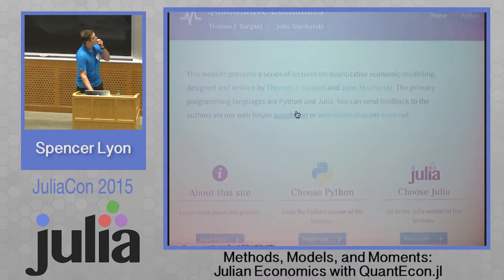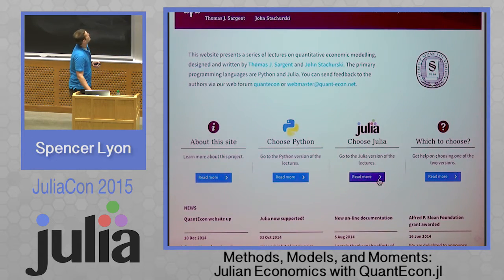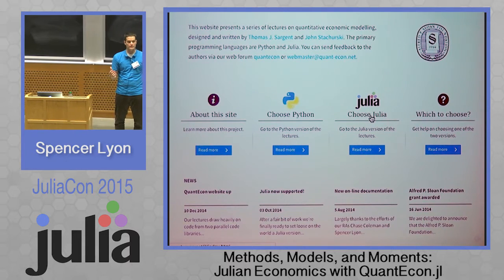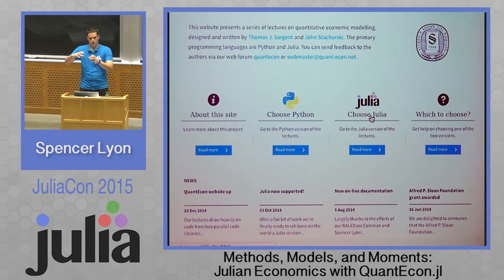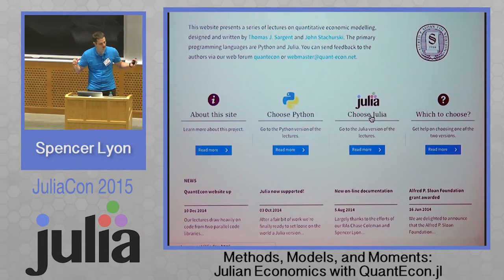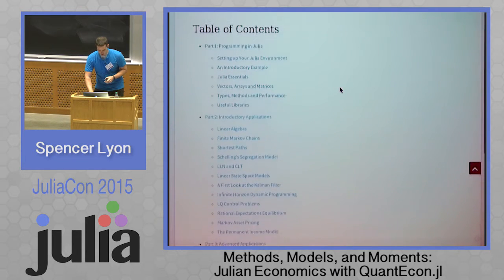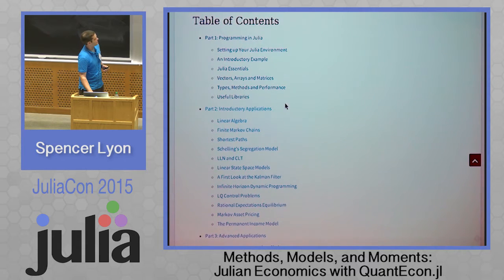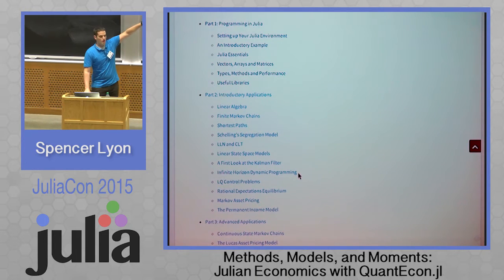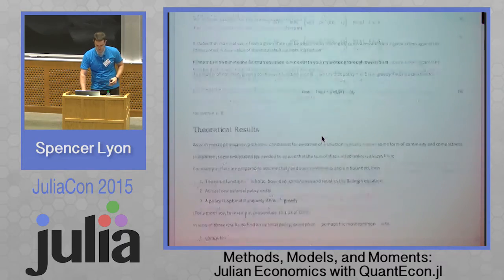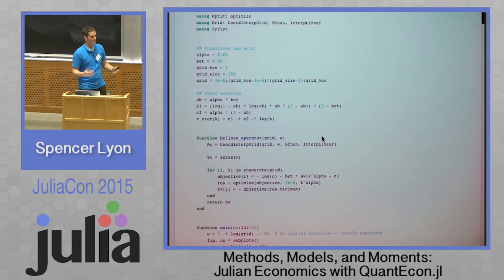Let me briefly show you what the website looks like. You land on the website and it explains a bit about the background, and then you can choose either a Julia track or a Python track. Each track has one part covering the basics of the language and common tools used in economics or data analysis, followed by a core set of introductory economic examples that build up foundational mathematical principles and outline basic economics. Then there's a section with more advanced examples. Sections two and three are the same on both tracks — we just show different code examples. The text of each chapter is the same.